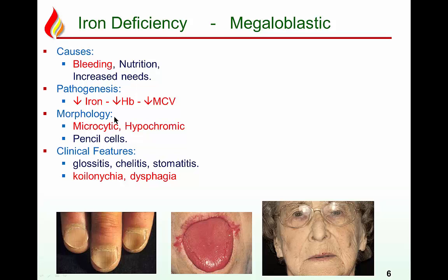The pathogenesis: bleeding causes decreased iron, decreased hemoglobin, and excess cell division because DNA is normal. This leads to small RBCs. Morphologically: microcytic (small RBCs), hypochromic (RBCs with less hemoglobin), and due to unknown reasons, elongated RBCs called pencil cells — a result of iron deficiency.